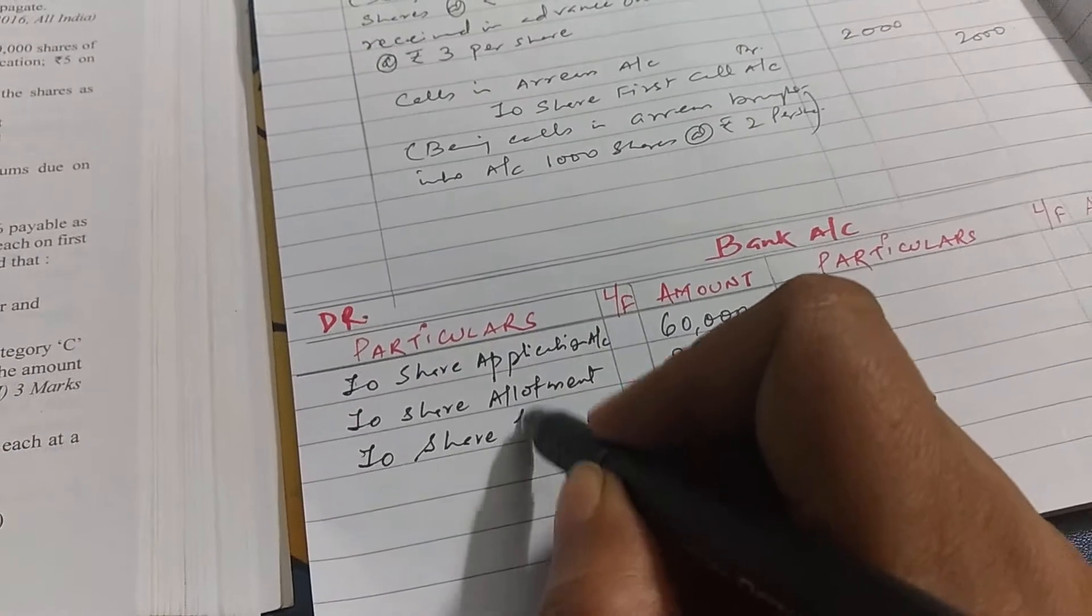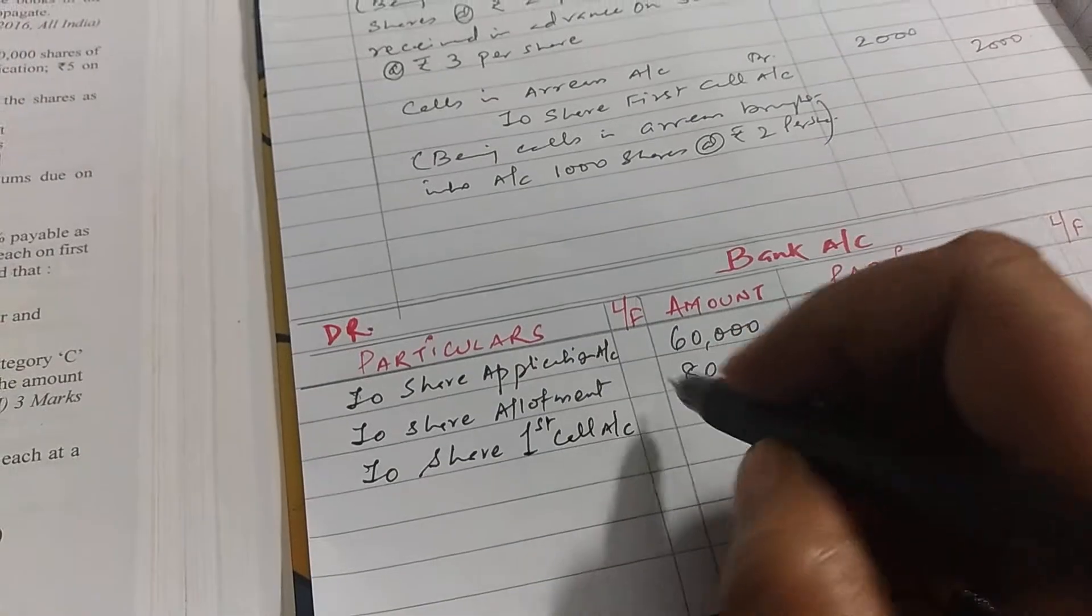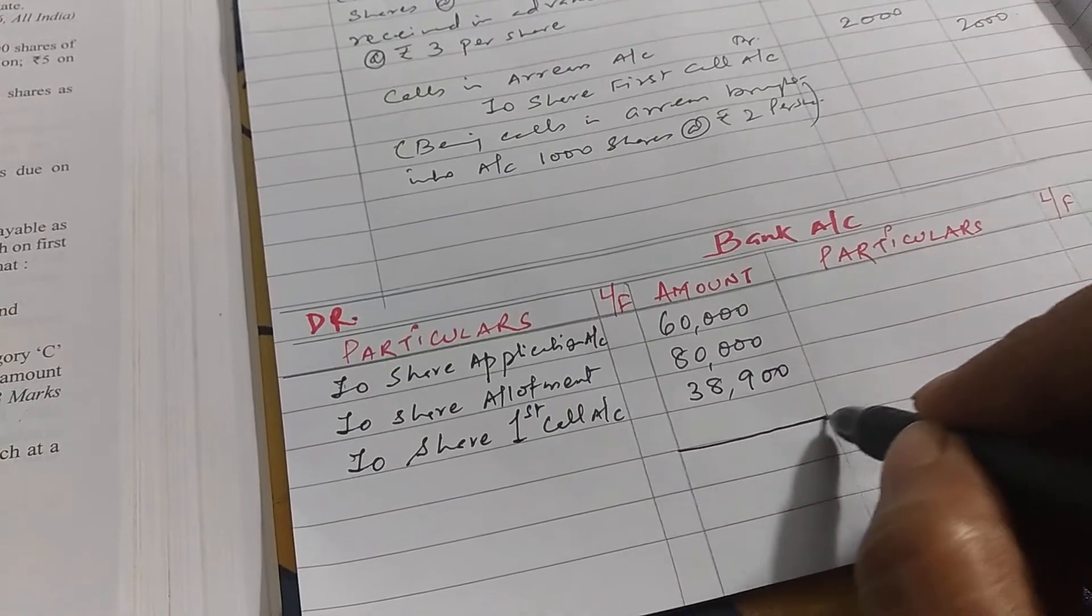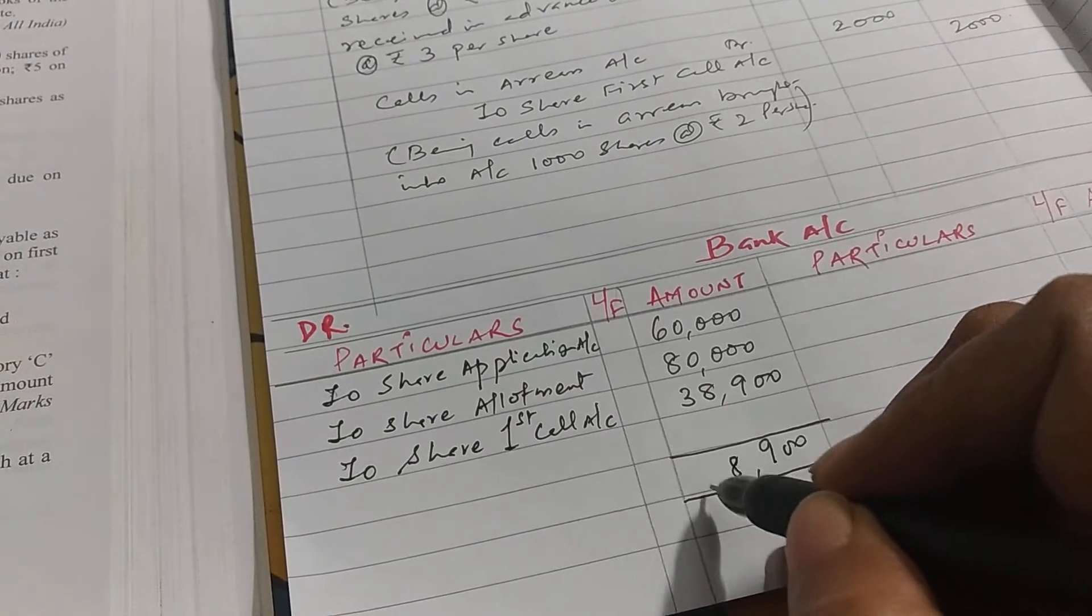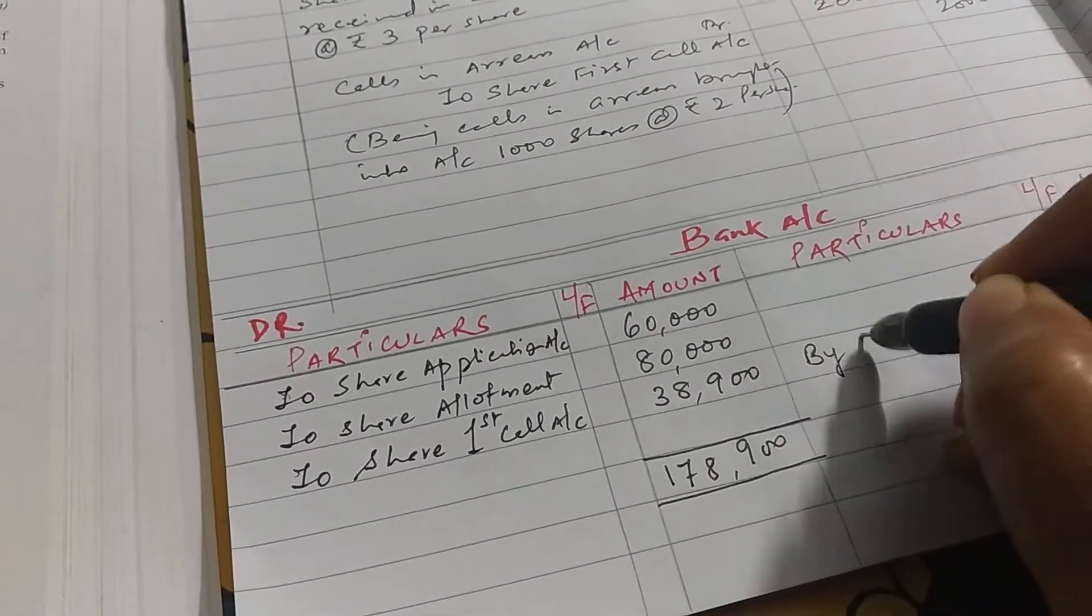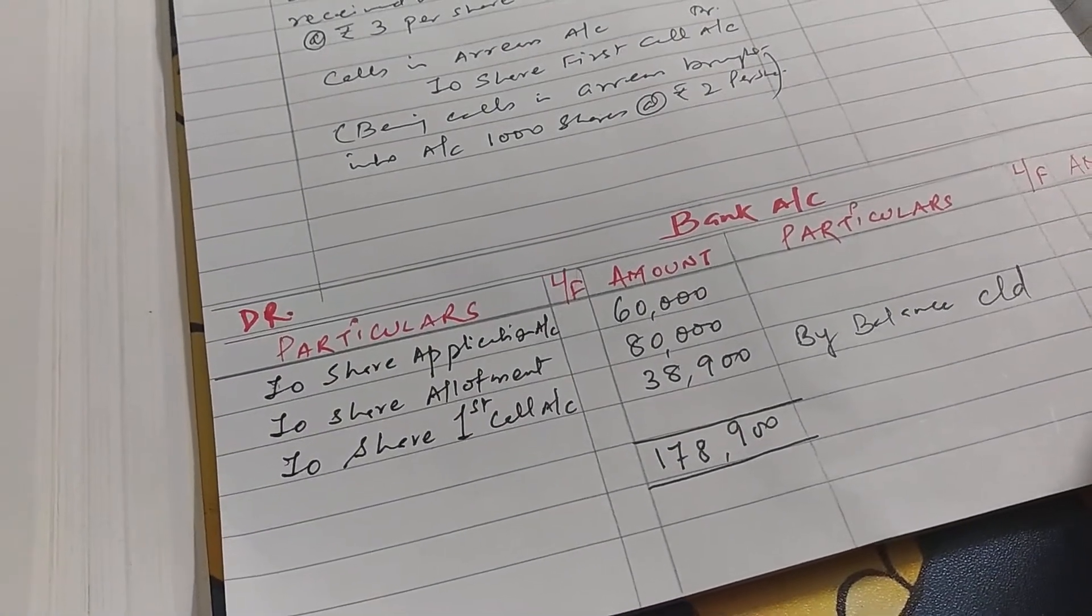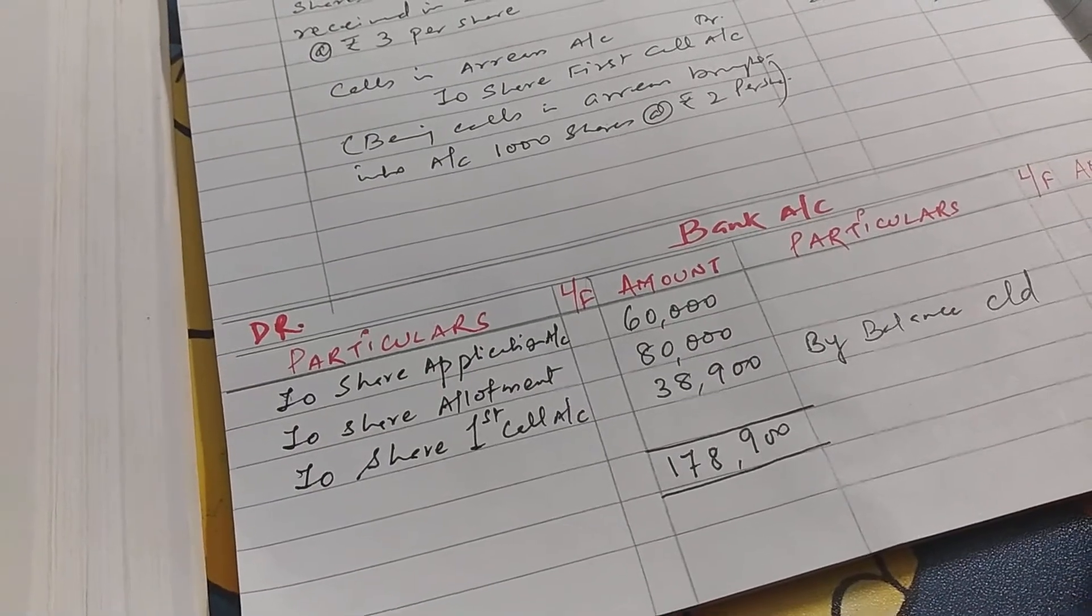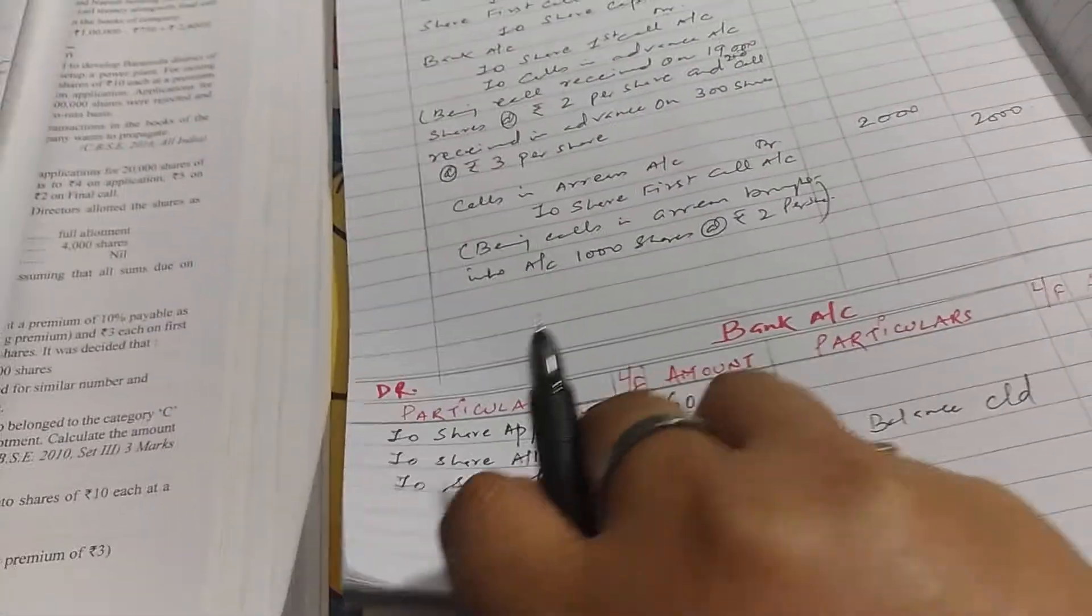So here share first call account, share first call account, how much is 38,900? Then we have to add 908, then 1,40,000. Then 1,78,900. So here by balance c/d 1,78,900. So both sides will be equal 1,78,900.